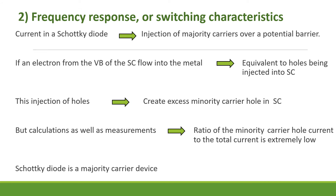The second difference between Schottky diode and P-N junction diode is in its frequency response or switching characteristics. Current in a Schottky diode is due to the injection of majority carriers over a potential barrier. If an electron from the valence band of the semiconductor flows into the metal, it is equivalent to a hole being injected into the semiconductor. This injection of holes creates an excess minority carrier hole in the semiconductor, but calculations and measurements show that the ratio of minority carrier hole current to total current is extremely low in most cases.